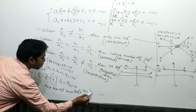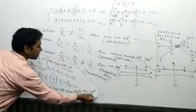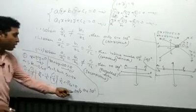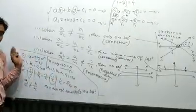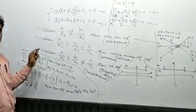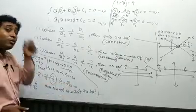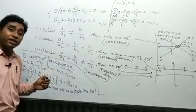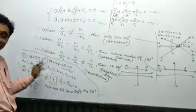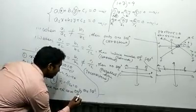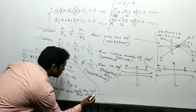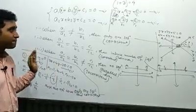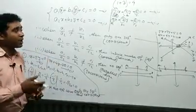So this pair of equations has only one solution. That means the system is consistent, and the two lines will intersect at exactly one point. The equations are solvable.